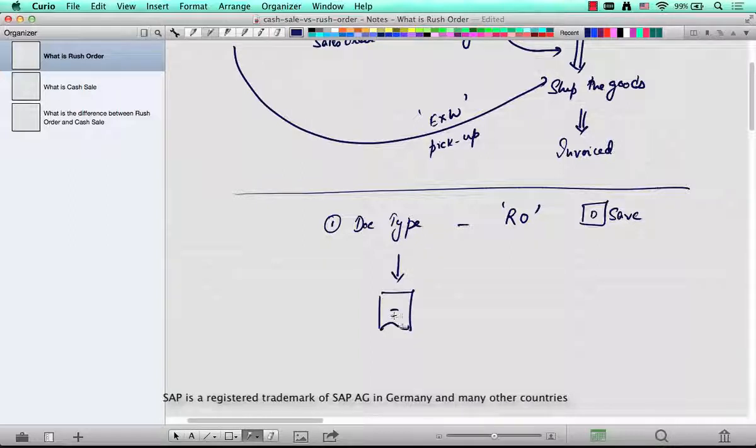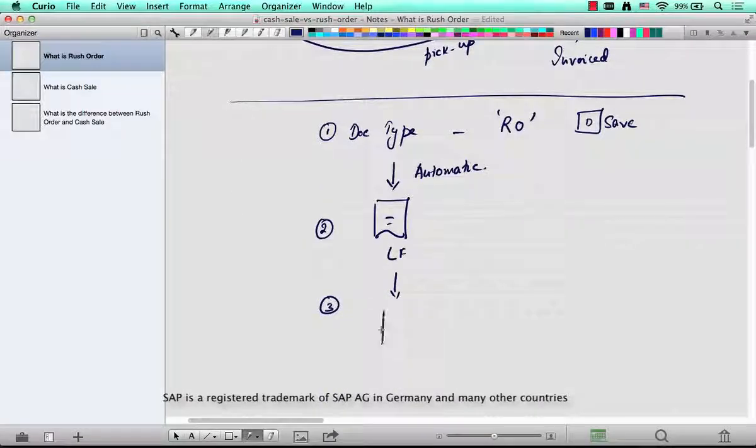LF (standard delivery type), and this is automatic. After that, an invoice will be created - that's a standard invoice type F2. So the key difference in terms of configuration between a standard order and a rush order is